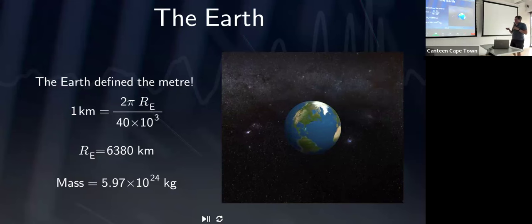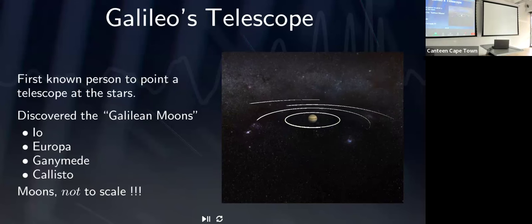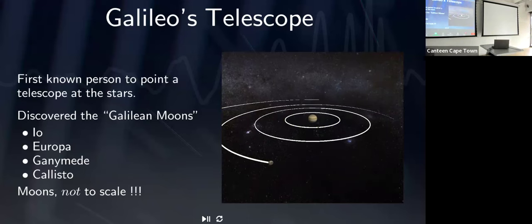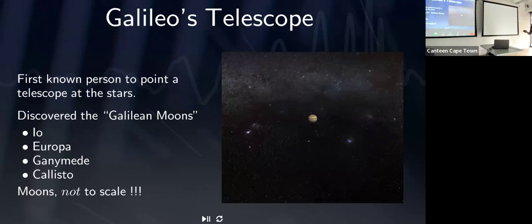The mass of the Earth is such that it's about 6 grams per cubic centimeter. Galileo was the first person to point a telescope at the heavens, and he noticed that Jupiter had four moons. He was also the first to discover that the innermost moons travel faster than the outermost moons, which was the basis for great breakthroughs in our understanding of gravity.